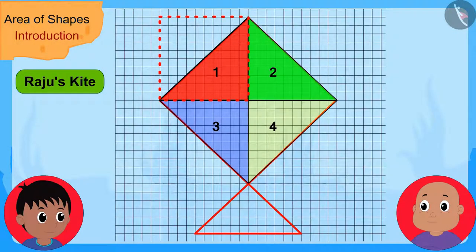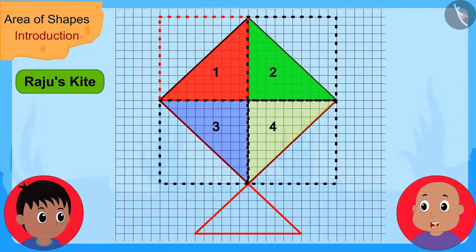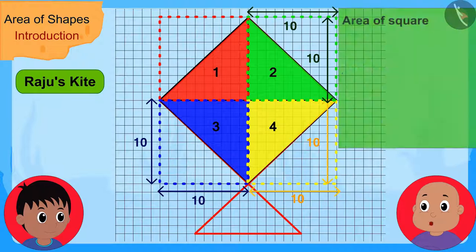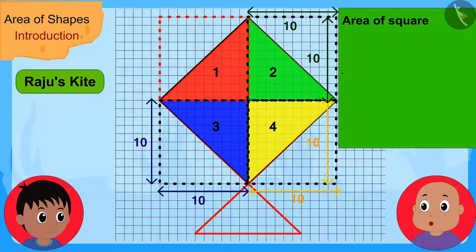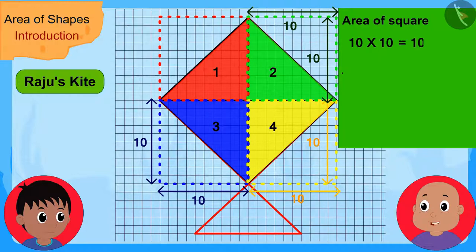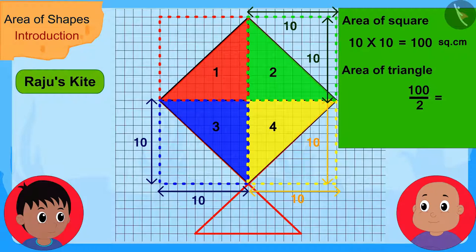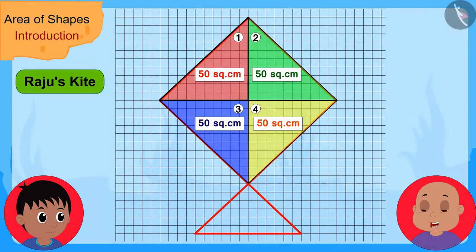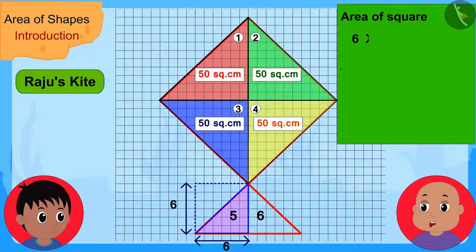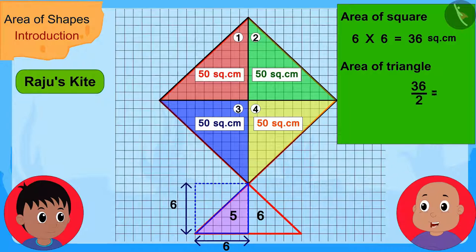'In exactly the same way, these three triangles are also half of these three squares. And the area of these three squares is also 10 times 10, or 100 square centimeters. Therefore, the area of these three triangles are also 50 square centimeters each. Now, this lower small triangle is half of this square. The area of this square is 6 times 6, or 36 square centimeters. So the area of this small triangle will be 36 divided by 2, or 18 square centimeters.'